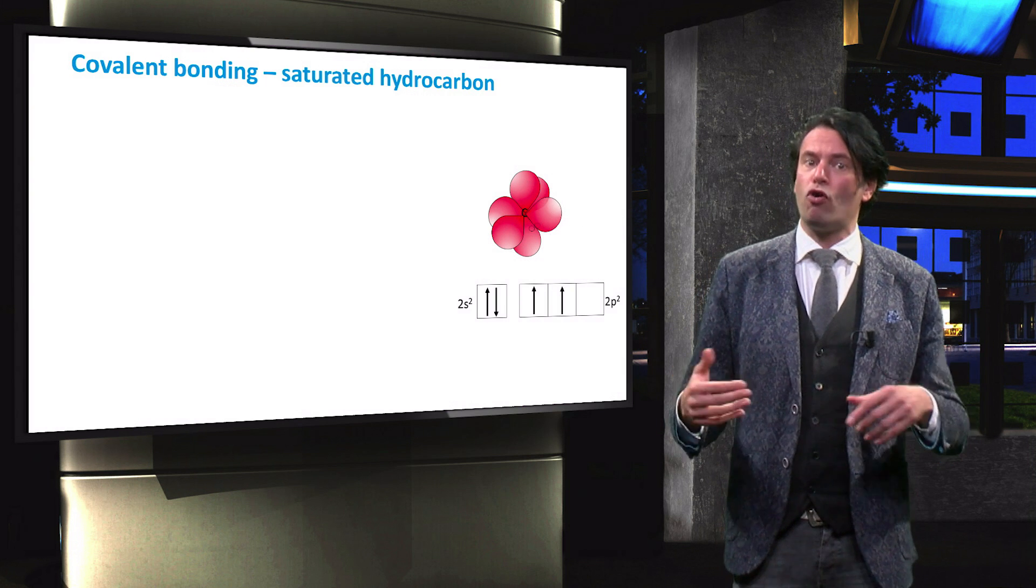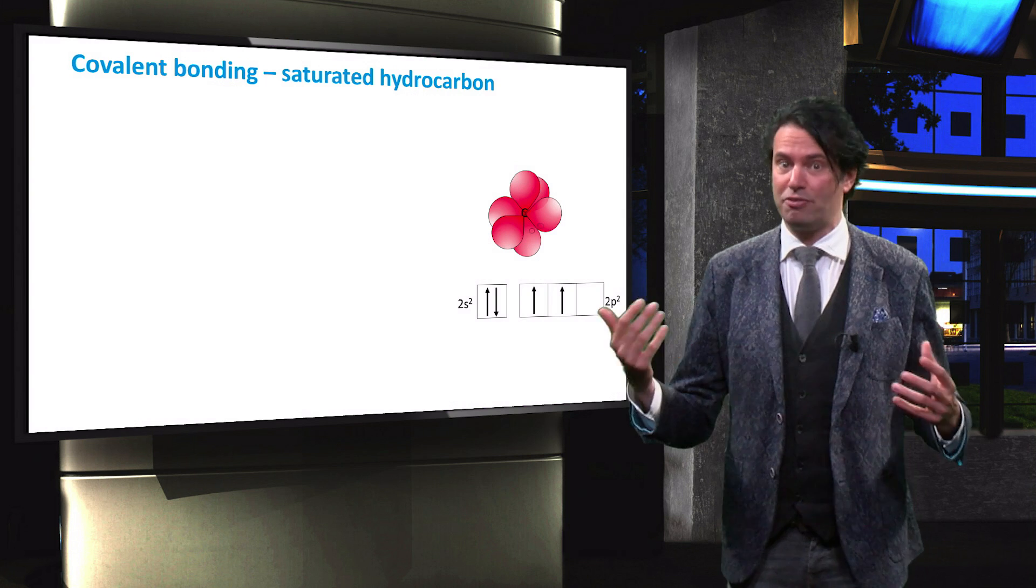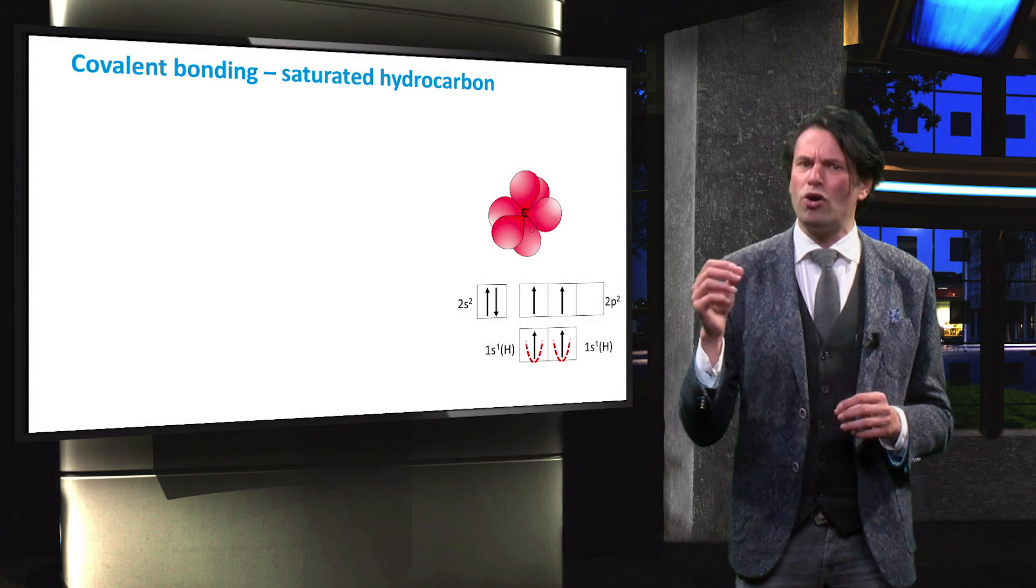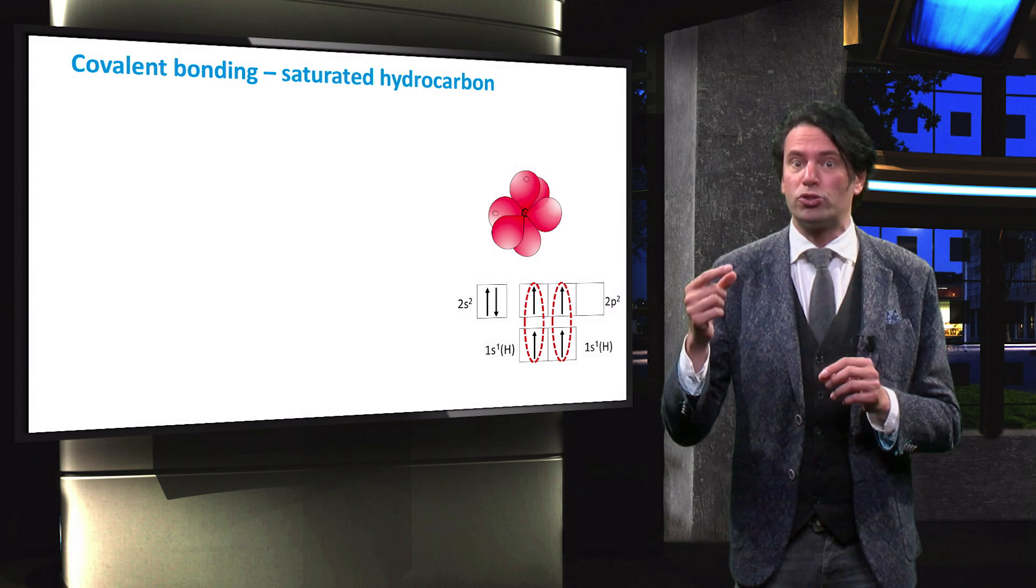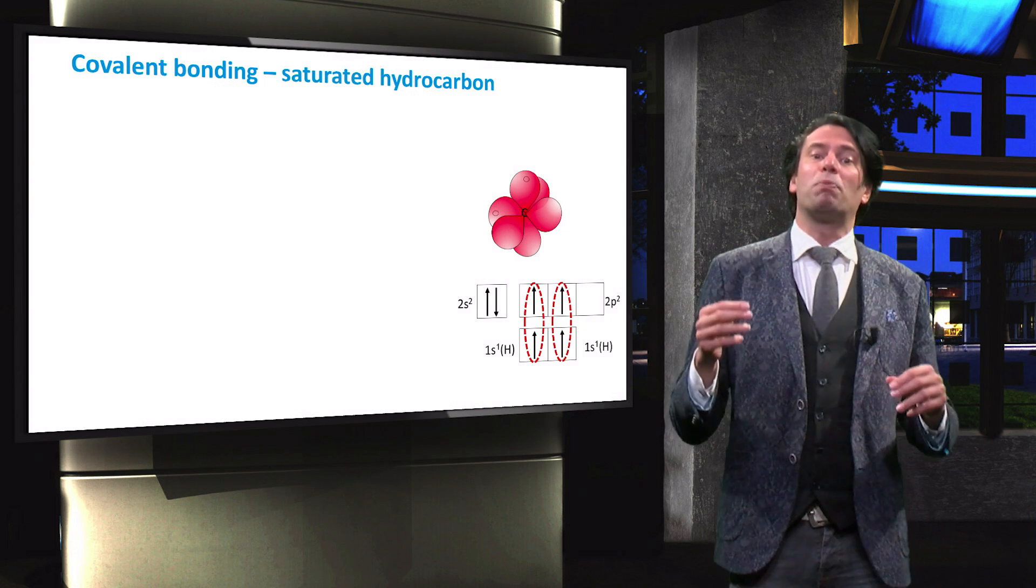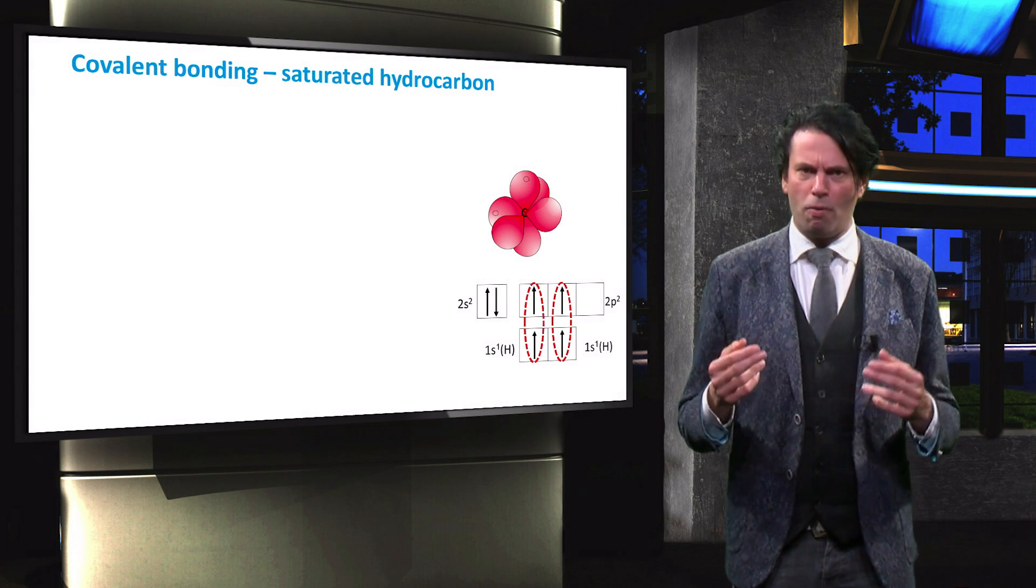When carbon forms a covalent bond with for instance hydrogen, the electron in one orbital is shared with an electron in the orbital of hydrogen to complete the octet and form a molecule.